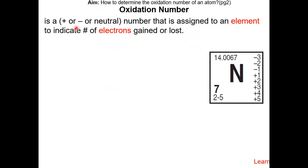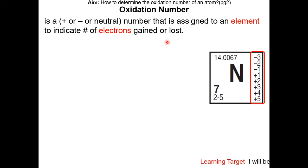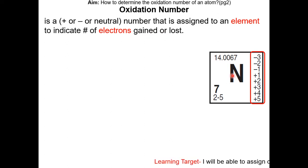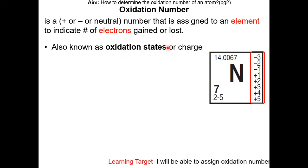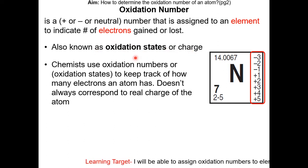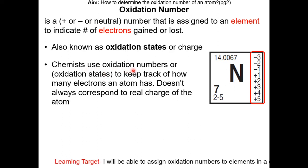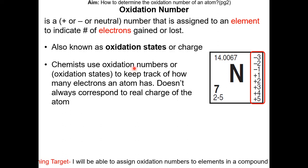Oxidation numbers are a positive, negative, or neutral number assigned to an element to indicate the number of electrons gained or lost. On the periodic table, each element has a set of oxidation numbers on the right side. Oxidation numbers are also known as oxidation states or charge. Chemists use oxidation numbers to keep track of how many electrons an atom has, but it doesn't always correspond to the real charge of an atom.